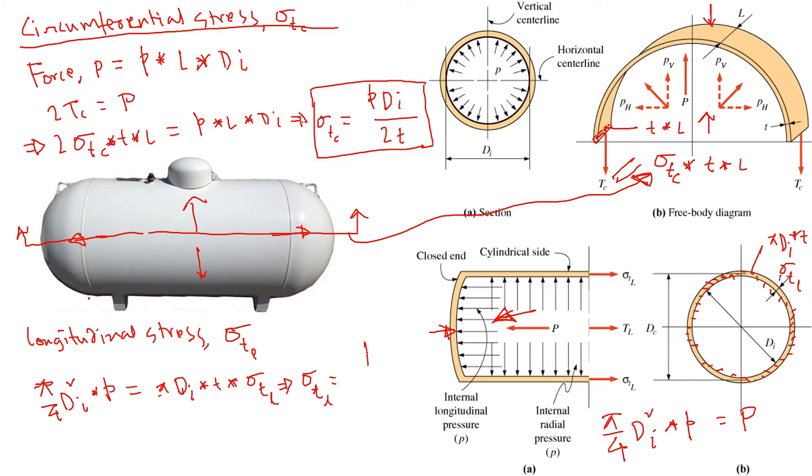If we solve for sigma tensile longitudinal, we'll find P di divided by 4t. We can see that this stress is half of the circumferential stress. Sigma tensile longitudinal is half of the sigma tensile circumferential.